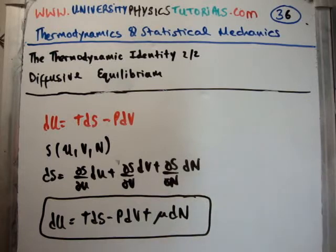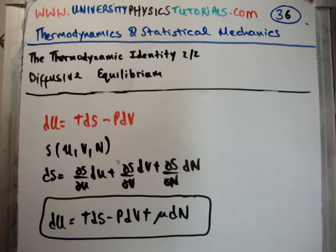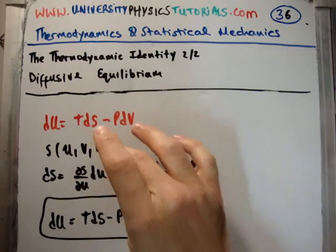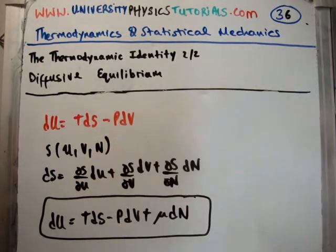This is the main thermodynamic identity — we'll be using this the whole time. We use this to derive the Gibbs factor, the Boltzmann factor, and it's very important in quantum statistics, in phase changes, and all that sort of thing. This is very important and very useful.